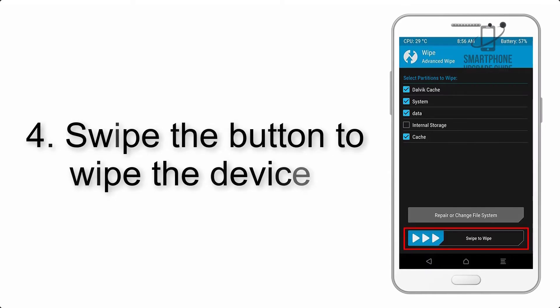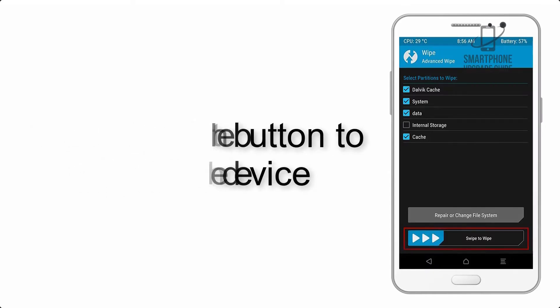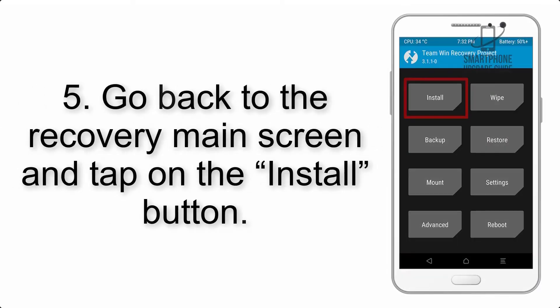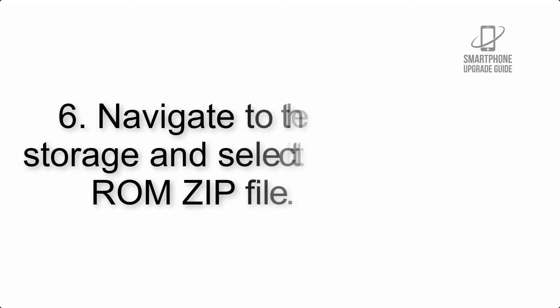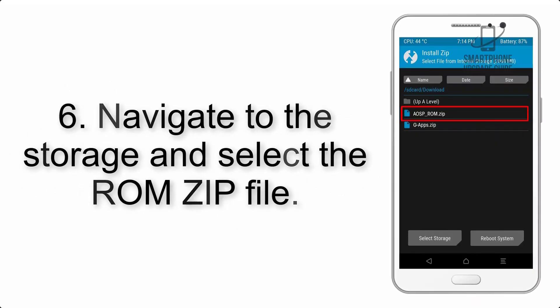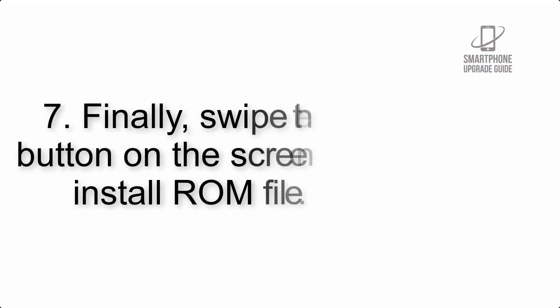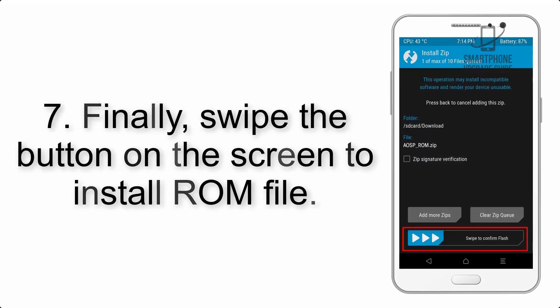Step 4: Swipe the button to wipe the device. Step 5: Go back to the recovery main screen and tap on the Install button. Step 6: Navigate to the storage and select the ROM zip file.